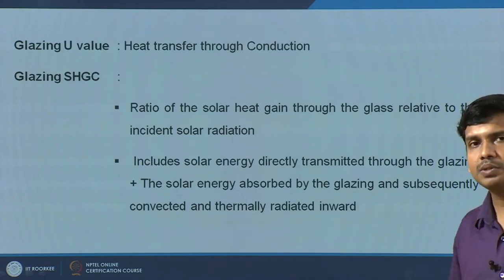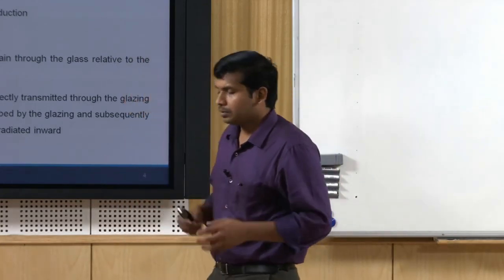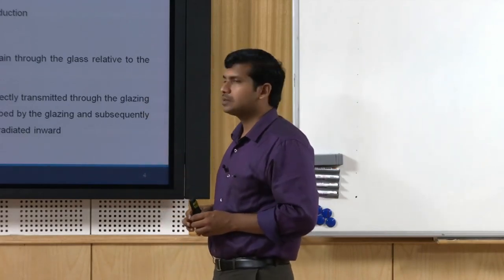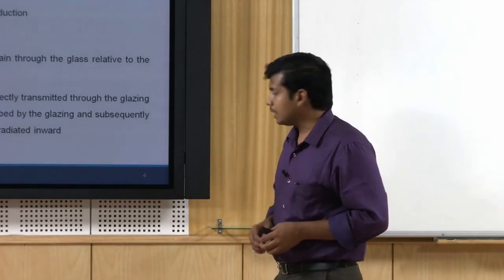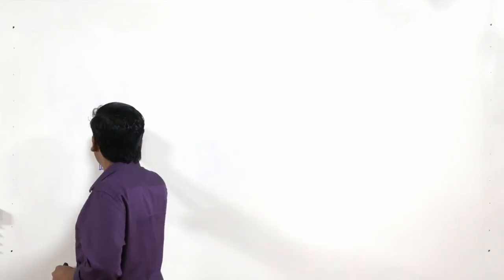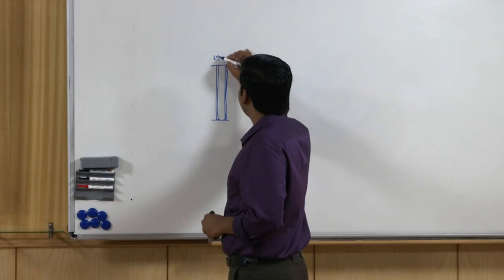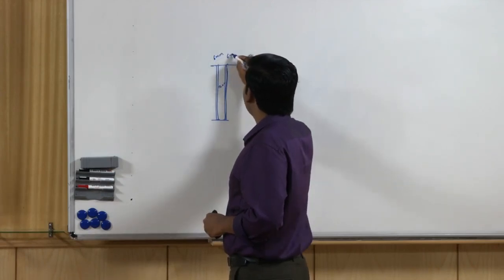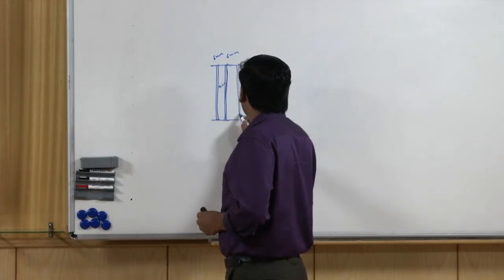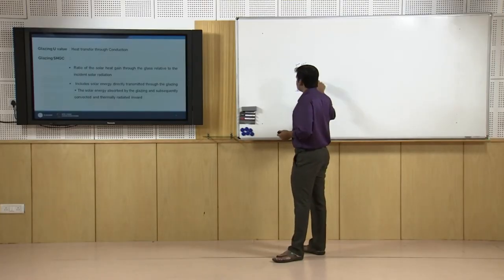The glazing U value is the first property we usually refer to — it is heat transfer through conduction, same as for the opaque wall system. It tells you how much conductive heat flow happens through the glazing system. Imagine a 6 mm single glass system versus a double glass unit with a 6 mm, 12 mm air gap, and another 6 mm layer. As you increase the number of layers to a triple glass system, the U value starts coming down.